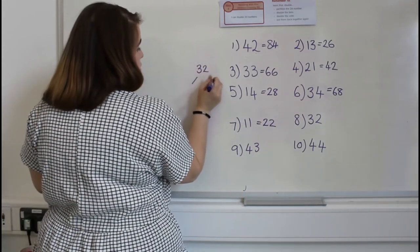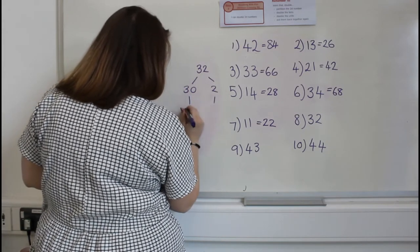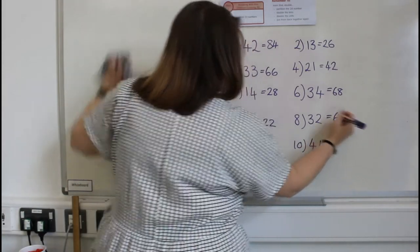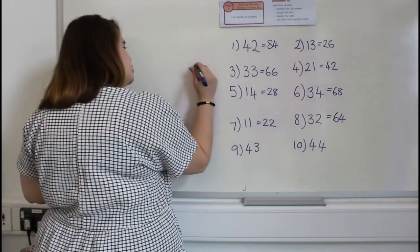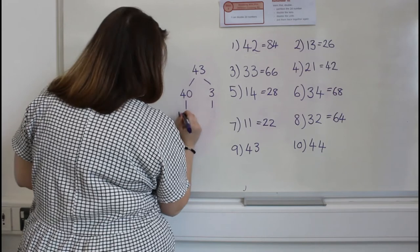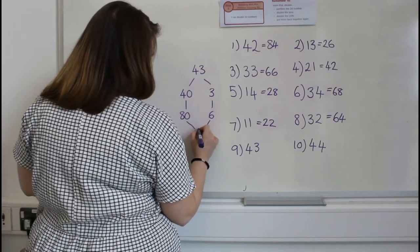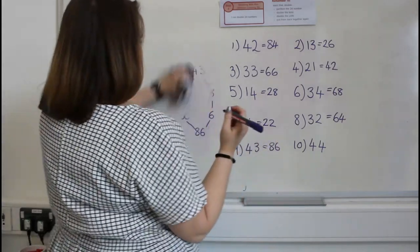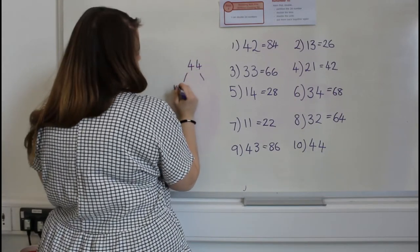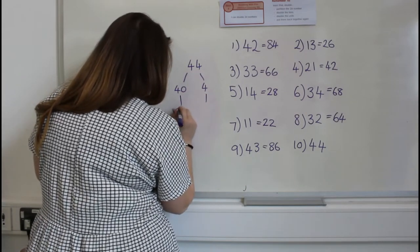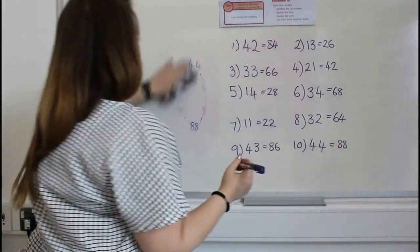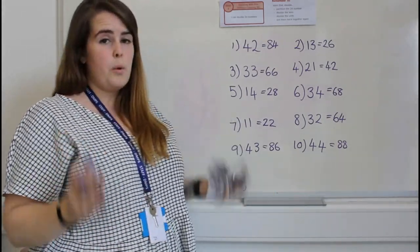Eleven: partitioned into ten and one, doubled is twenty and two, bring it back together — twenty-two. Thirty-two: partitioned into thirty and two, doubled is sixty and four, bring it back together — sixty-four. Forty-three: partitioned into forty and three, doubled is eighty and six, bring it back together — eighty-six. And the very last question: forty-four partitioned into forty and four, doubled is eighty and eight, bring it back together — eighty-eight.